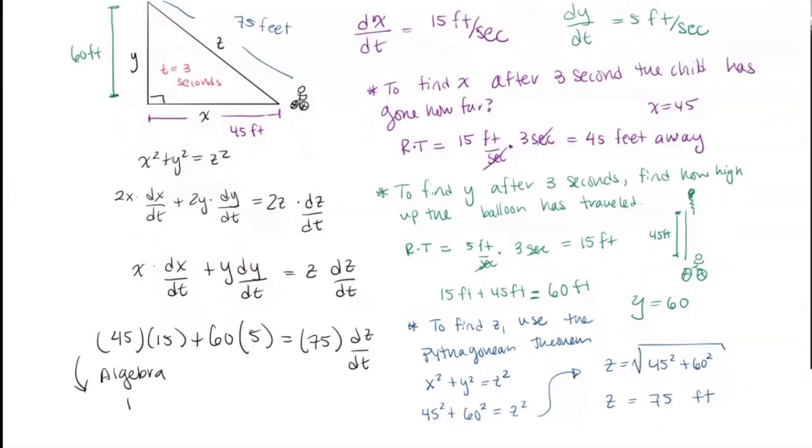And that tells us that dZ/dt, the change in the distance between the child and the balloon over time, and that was our goal. That's what we wanted to find originally. And this equals 45 times 15 plus 60 times 5 divided by 75. And that will work out to be 13 feet per second.